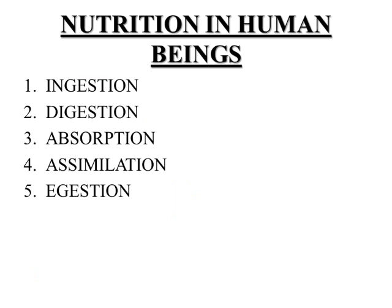Now we will study heterotrophic nutrition in multicellular organisms, which are made up of more than two cells. We will discuss nutrition in human beings. Humans have organ-grade body organization, and nutrition is completed with the help of the digestive system, which is composed of the alimentary canal and its associated glands. The food we eat is composed of five components: carbohydrates, fats, proteins, vitamins, minerals, and water. Carbohydrates, fats, and proteins need to be digested, while vitamins, minerals, and water are absorbed as they are.